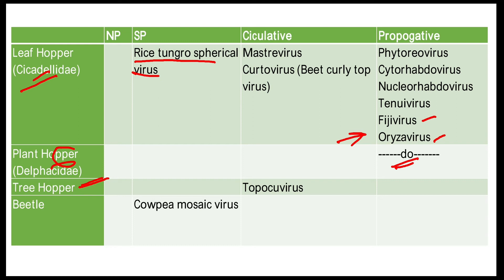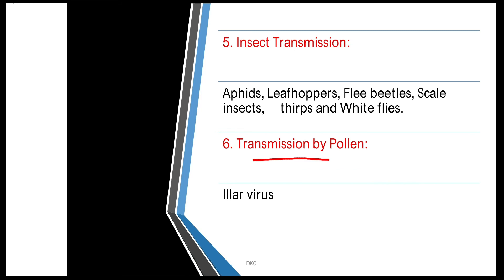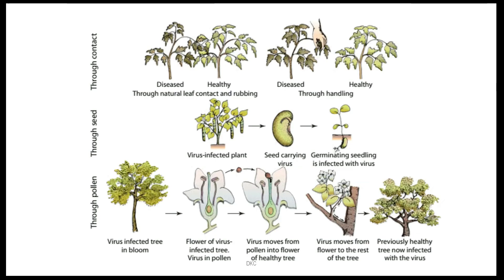Transmission by pollen — in this method, the infected host produces flowers and also produces pollen. The viruses stick to the walls of the pollen, and along with the pollen, they transmit to other trees or other plants, where they then cause infection.